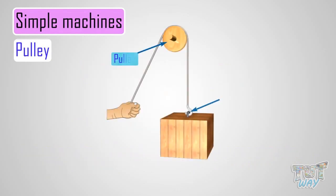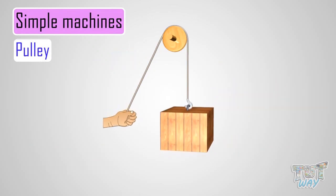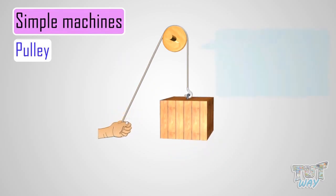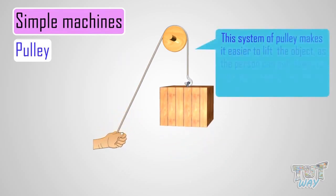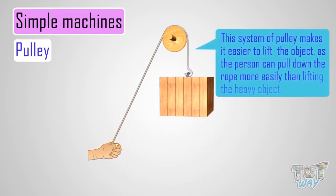One end of the rope is attached to a heavy object which we want to lift, and the other end of the rope is pulled through the system of pulley like this. This system of pulley makes it easier to lift the object, as the person can pull down the rope more easily than lifting the heavy object.